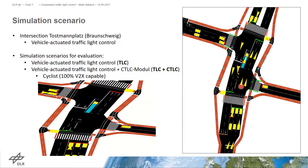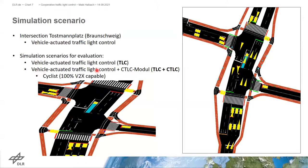For the simulation scenario, we decided to use the real research intersection Toastmannplatz in Braunschweig. Here you can see a picture from the simulation of this intersection — we established a SUMO network with the whole infrastructure, where cyclists drive on their own infrastructure with separate signals. For the analysis of our novel control, we established two scenarios: the first is the actual vehicle-actuated traffic light control, and the second is the actual control with the cooperative traffic light control model integrated, allowing us to compare both scenarios and analyze our new model.